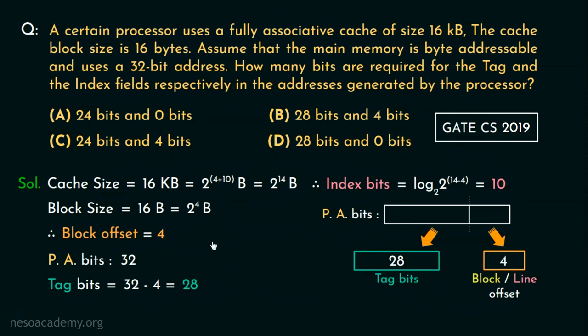We have already calculated the tag bits as 28 bits and we also found out the block offset is 4 bits. We are dealing with fully associative memory mapping and in case of fully associative memory mapping we don't really require any bit for the index field because there are no index fields specified in the address split.